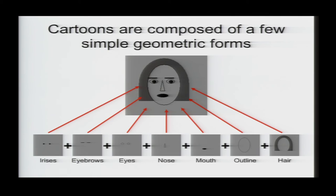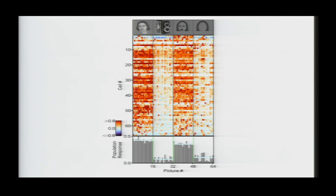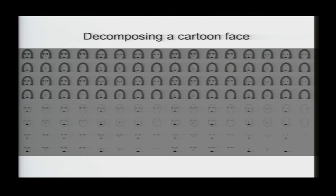And first, we confirmed that the cells actually do respond to the cartoon faces, so we generated these cartoon versions of the real faces, and here you can see the responses of a population of cells in the middle face patch to the 16 real faces, 16 non-face objects, 16 cartoon faces, and 16 cartoon face parts. You can see that the response to the cartoon faces was about 80% that to the real faces. So, the cells do treat the cartoon faces as faces, and then we presented all 2 to the 7th equals 128 combinations of these seven parts to each cell.